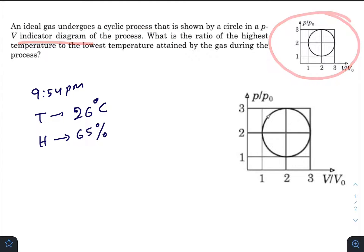As you can see of the process, what is the ratio of the highest temperature to the lowest temperature attained by the gas during the given process? So let us start. As you can see that in this diagram or in this plot,